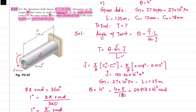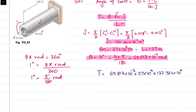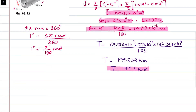Now we have all the values — J, G, L, and theta — so we can substitute into the formula. T = theta × G × J / L = (69.813 × 10⁻³) × (27 × 10⁹) × (132.324 × 10⁻⁹) divided by 1.25. This gives the torque T = 199.5 N·m. This is the answer to part A.